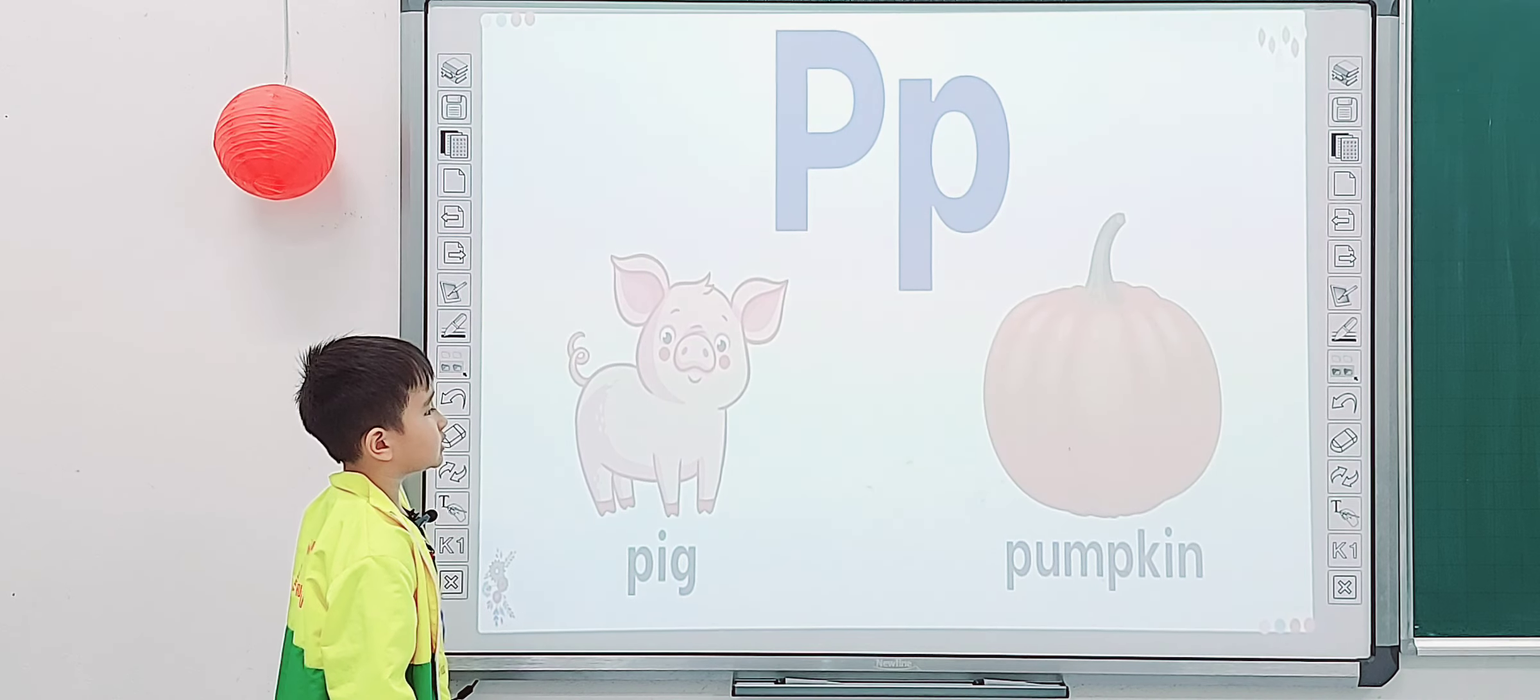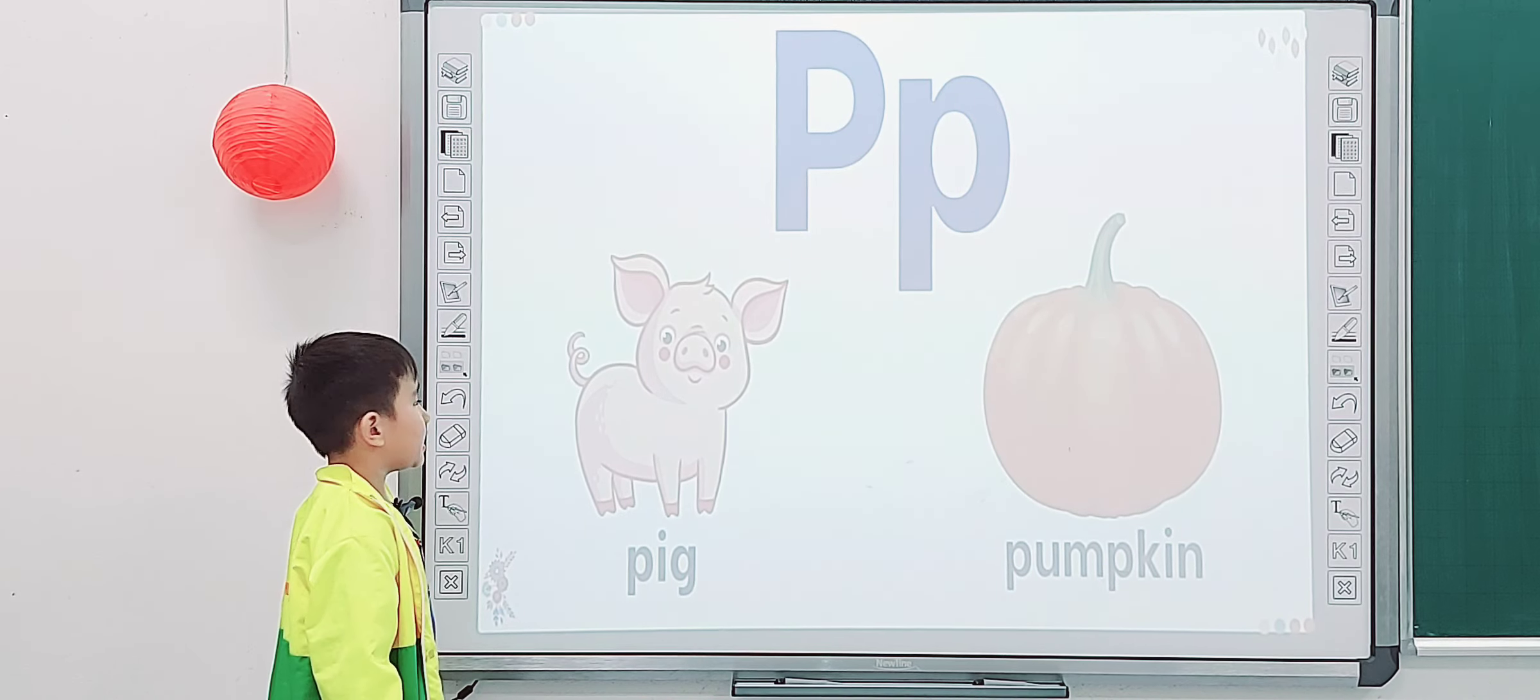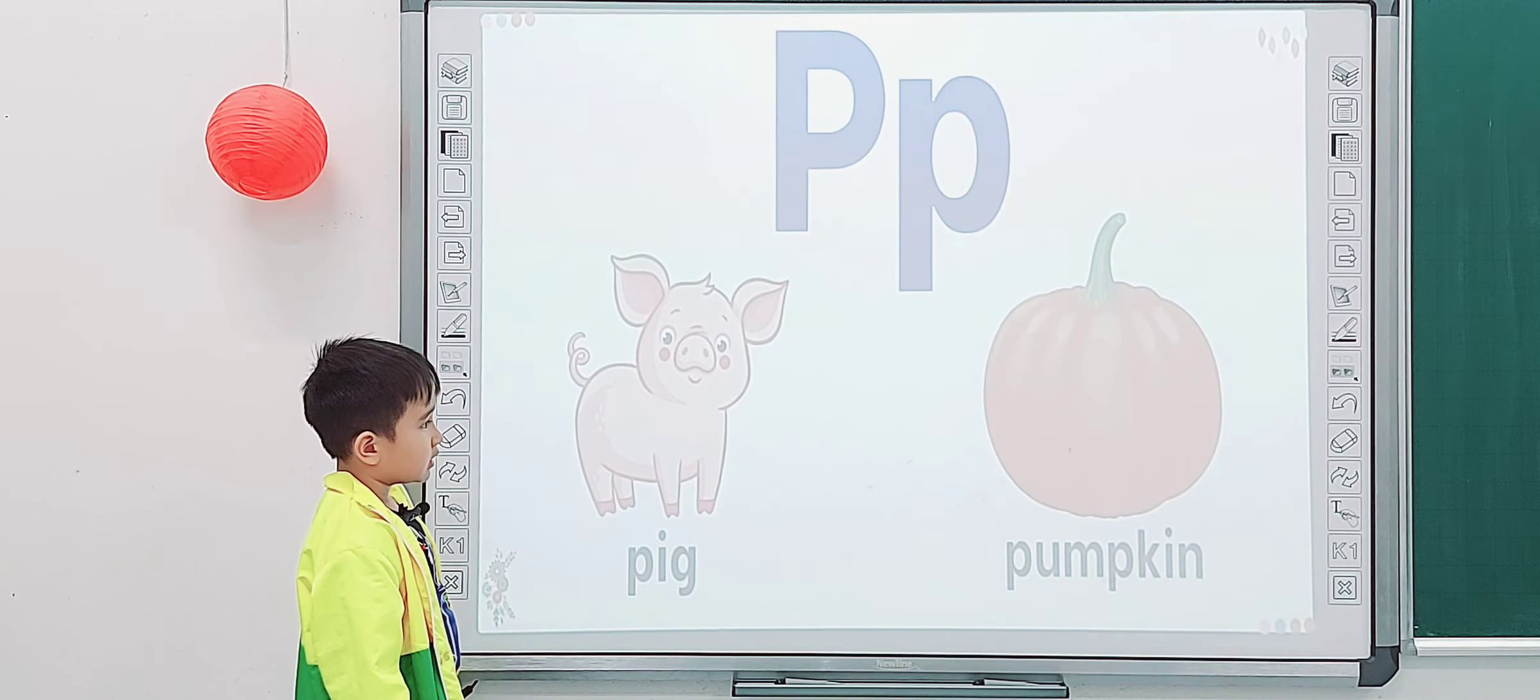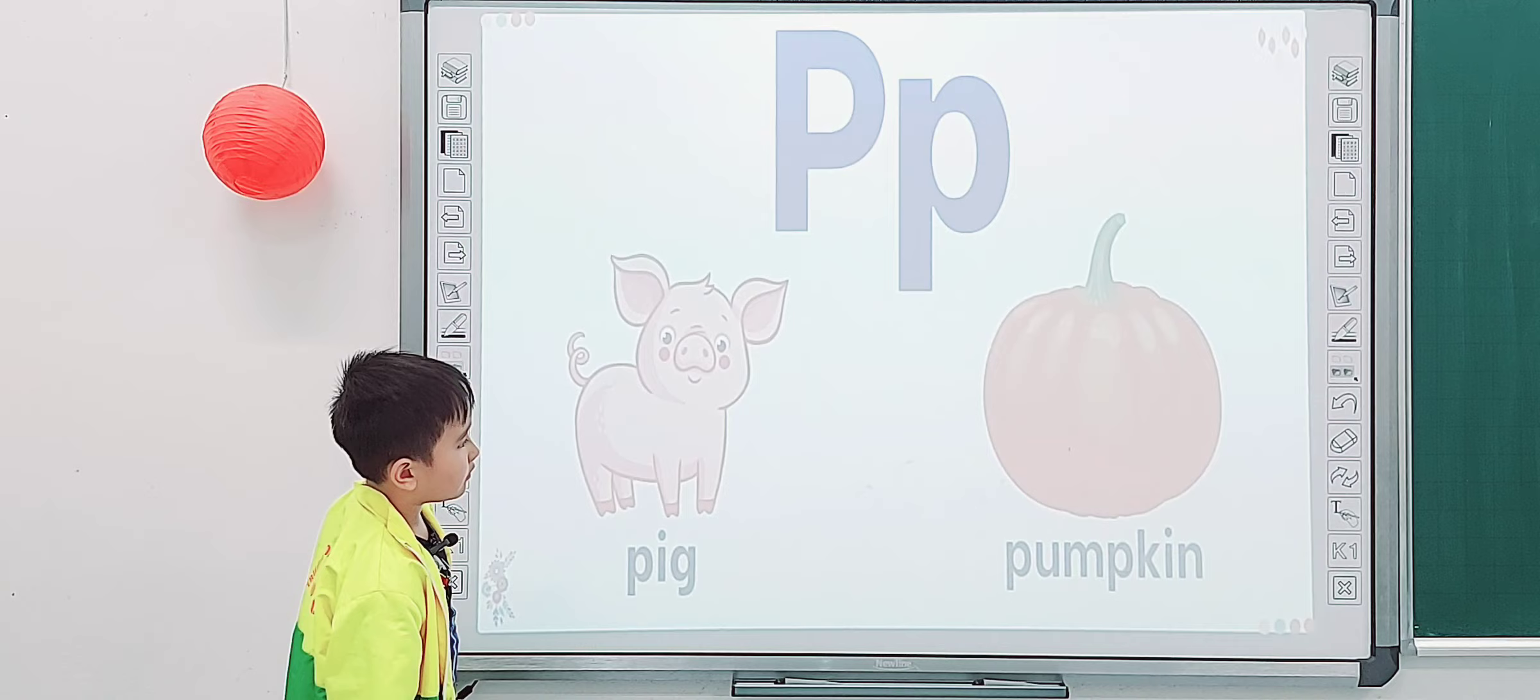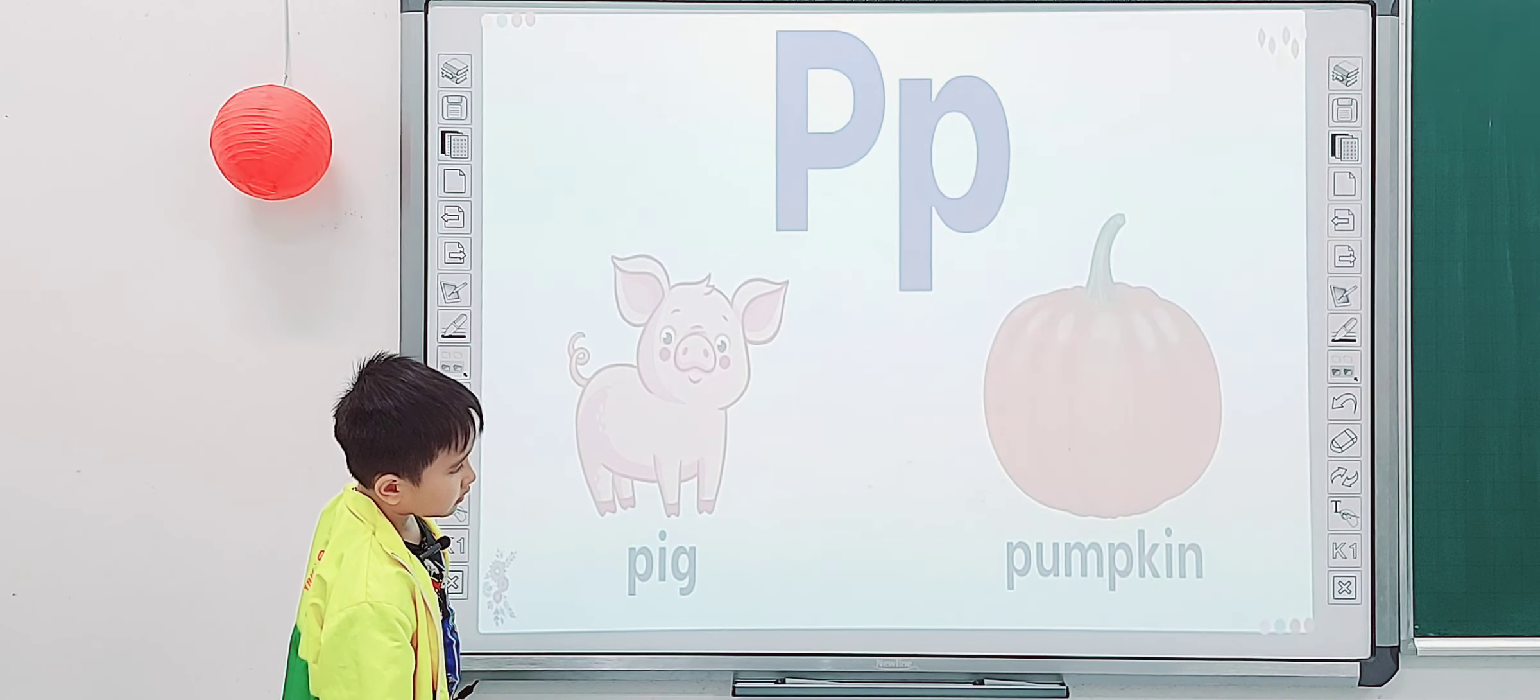P. Pea. Pumpkin. What color is the pig? It is pink. What color is the pumpkin? It is brown. No, I think it is not brown. It is orange.